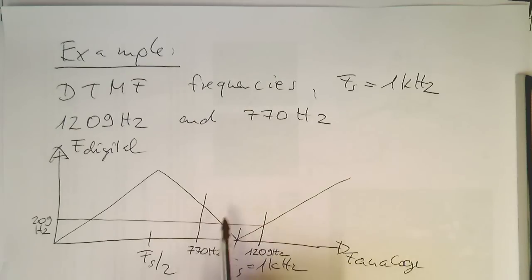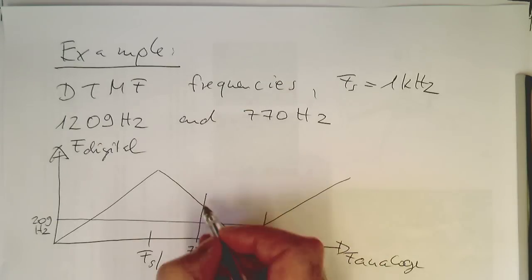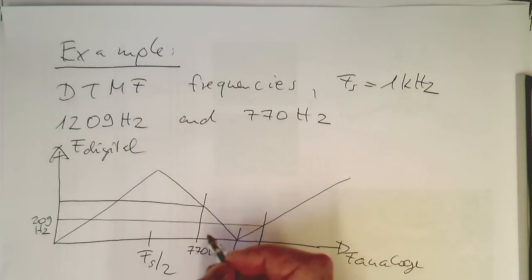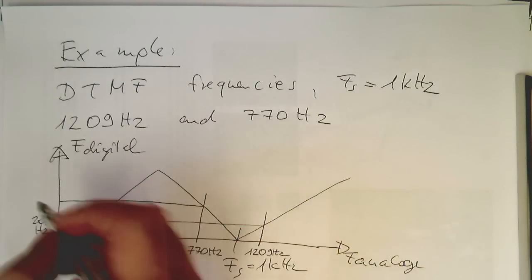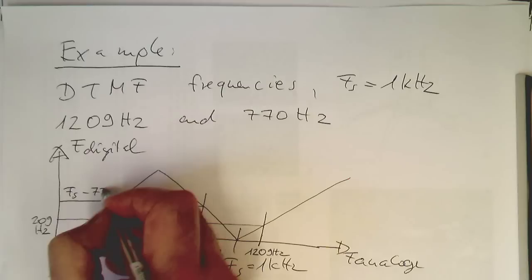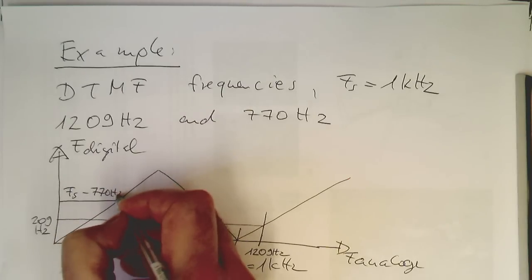This is 770 hertz here. This is on the negative slope. So in order to get this one, we need to do sampling rate Fs minus 770 hertz.